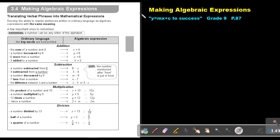Part 11. Making algebraic expressions. You will find this on page 87 in the Namibia Mathematics Grade 9 textbook, Y equals mx plus c to success. Making algebraic expressions.